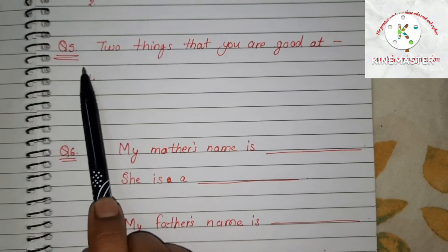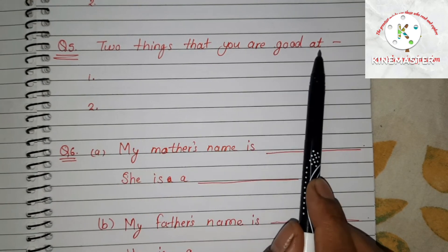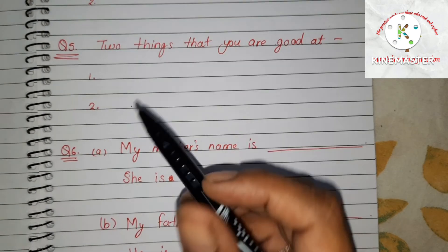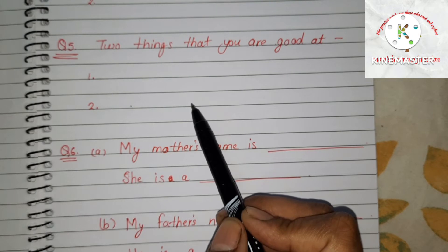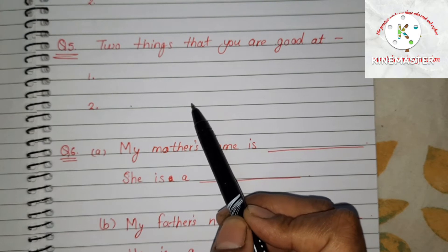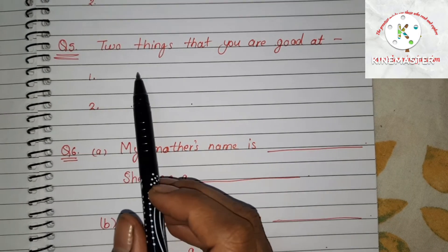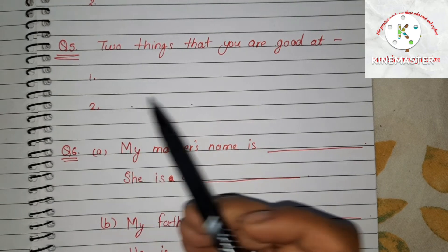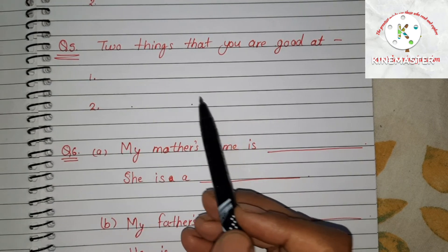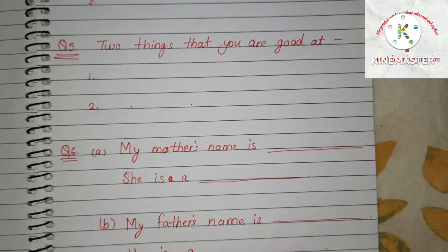Question number 5: two things that you are good at. The child has to write two things which he thinks he is good at. For example, maybe the child is very good at drawing, reading, or running — he has to write those two things.